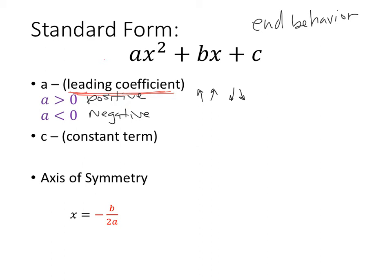What that means for us is that the graph is either going to have a minimum or a maximum. When a is greater than zero — positive — the parabola points up and we have a minimum value. When a is negative, the graph points down and we have a maximum. It seems counterintuitive, but you have to look at the direction the parabola is pointing.